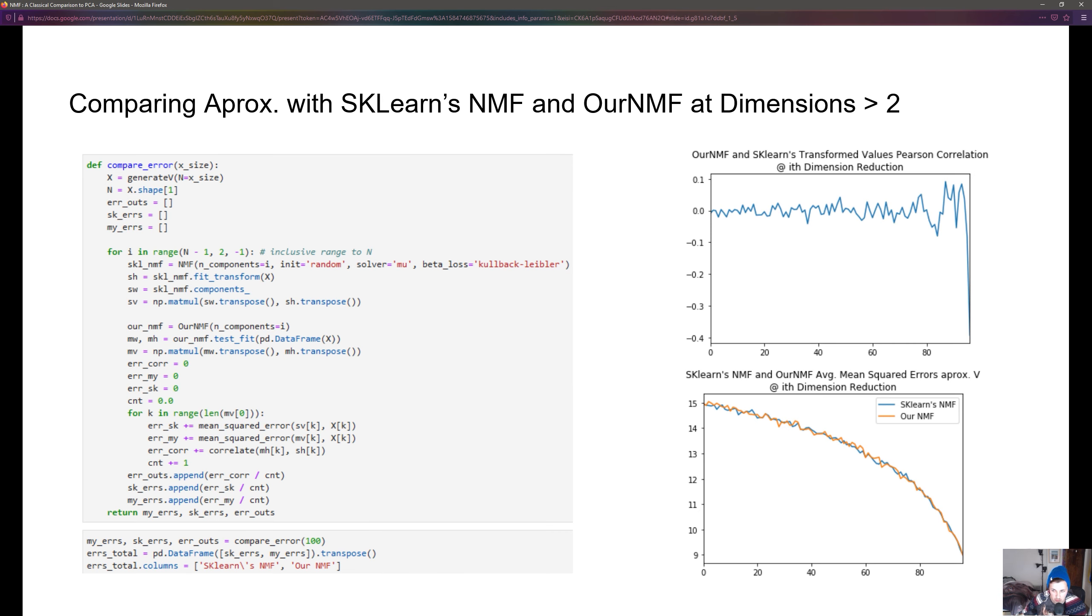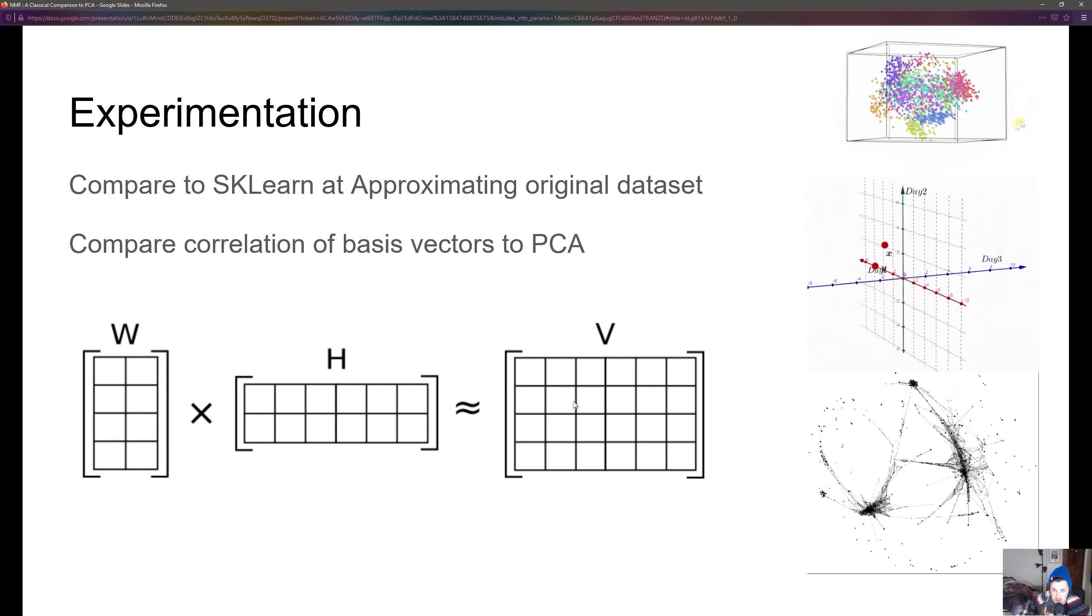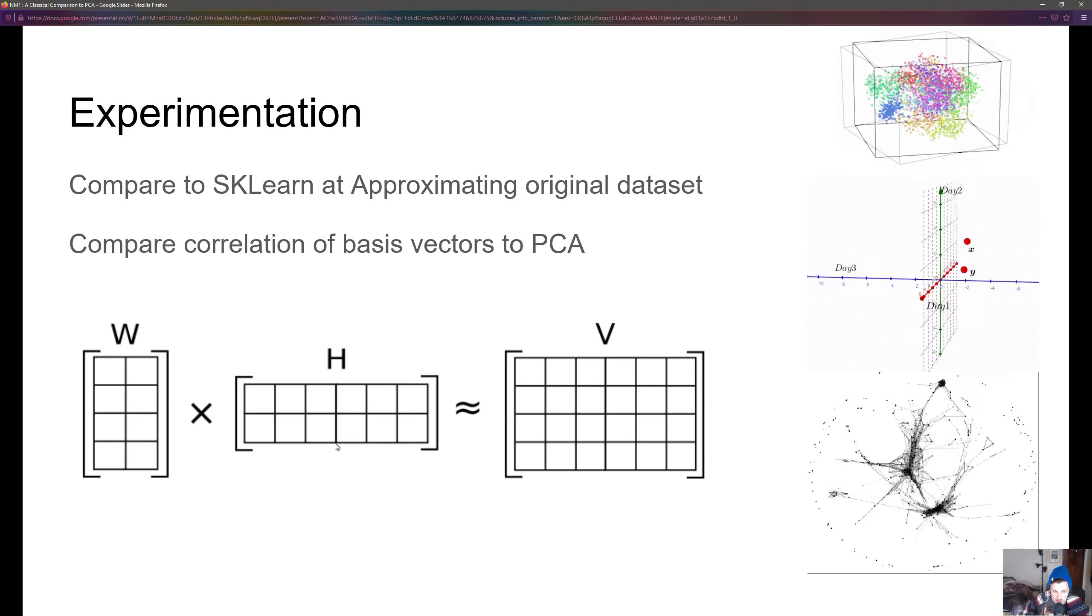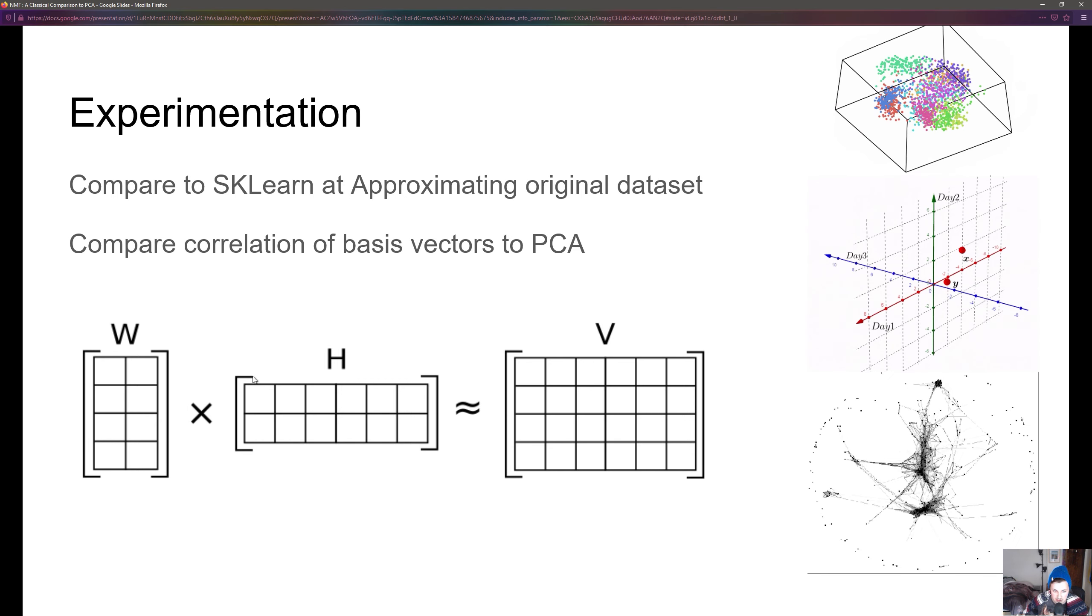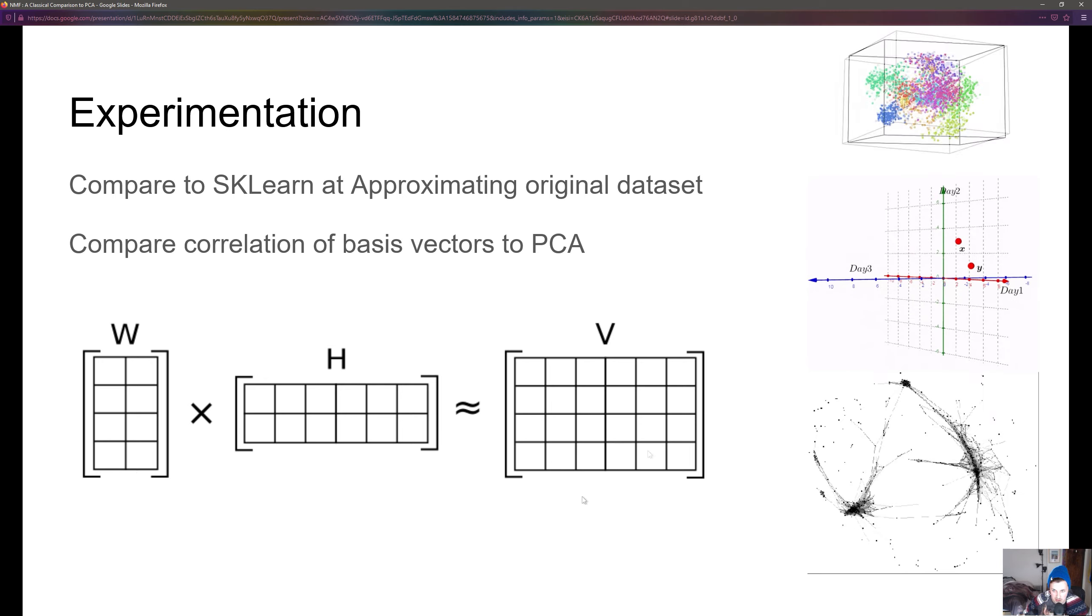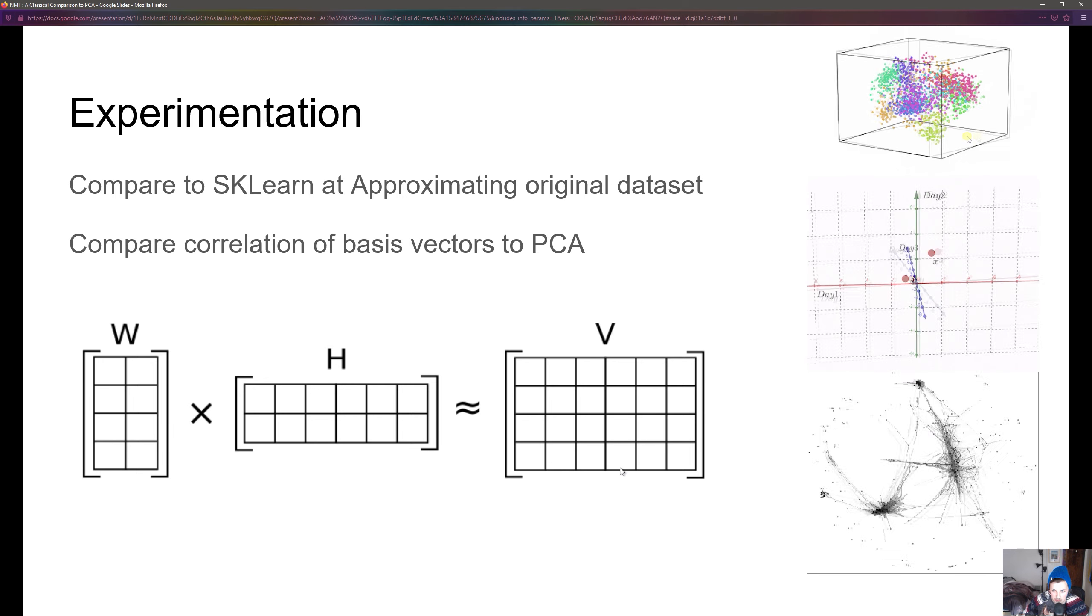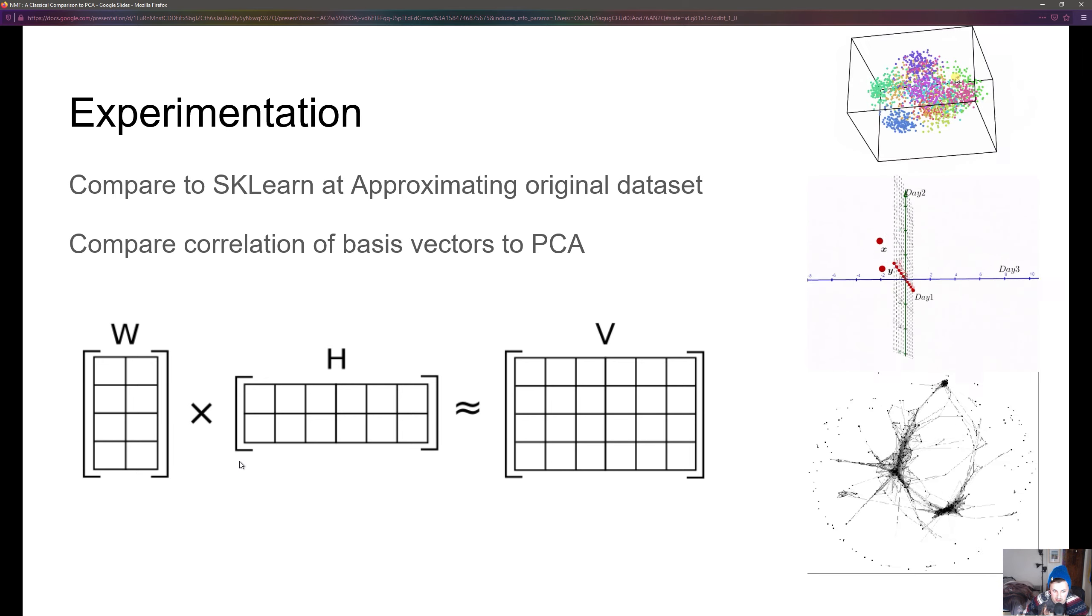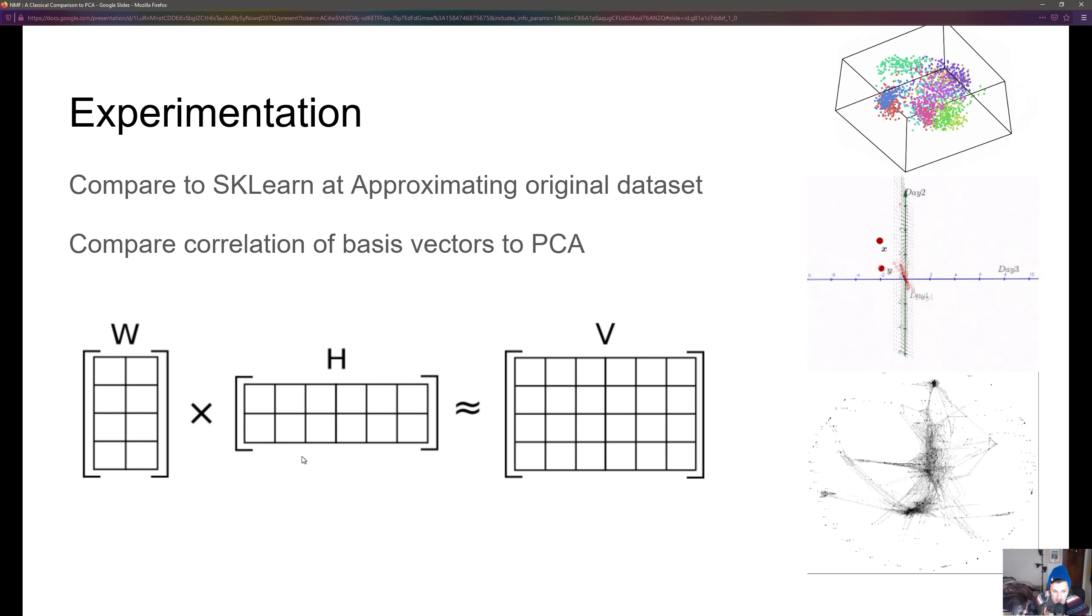Moving forward I wanted to investigate the differences between our NMF and scikit-learn's NMF at approximating the original input V. One of the cool things NMF can do is that you can have W and H as your matrices and these can be smaller in total size than the original V, and you can approximate the original V with a smaller dimensional reduction of W and H.